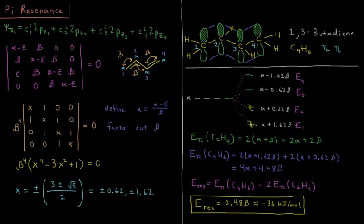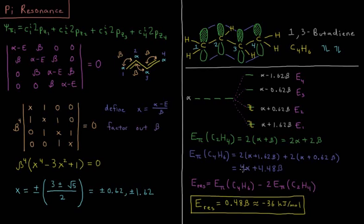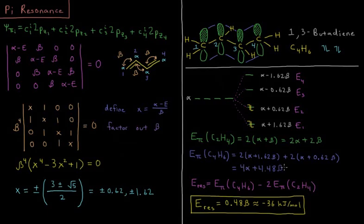The energy of our pi system in C2H4 from the previous video on Huckel theory, that was equal to, we had two electrons in our lowest energy orbital, which had an energy of alpha plus beta. So the energy of that pi system was 2 alpha plus 2 beta. In this case, we have four electrons, two of them in an alpha plus 1.62 beta orbital, two of them in an alpha plus 0.62 beta orbital, giving us a total of 4 alpha plus 4.48 beta.